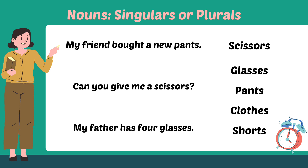Like table — if there is one table, then it will be singular. And if there are more tables — two, three, four, five, six tables — then it will be plural. Like house: if we talk about one house, then it will be singular. And if we talk about many houses, then it will be plural.